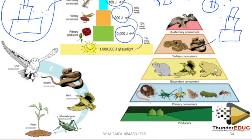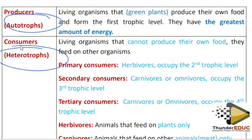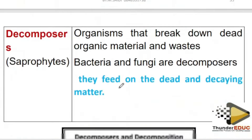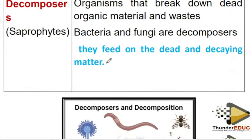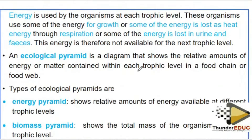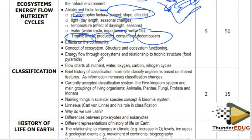Sometimes we ask: what will happen to this organism if another is removed? Try to read this content. We also like to bring terminologies — autotrophs are organisms that can produce their own food; heterotrophs feed on other organisms; decomposers break down dead organic matter, like saprophytes and bacteria.